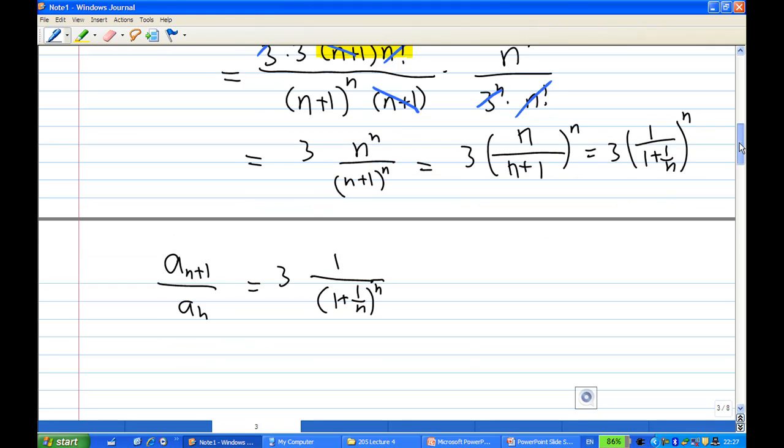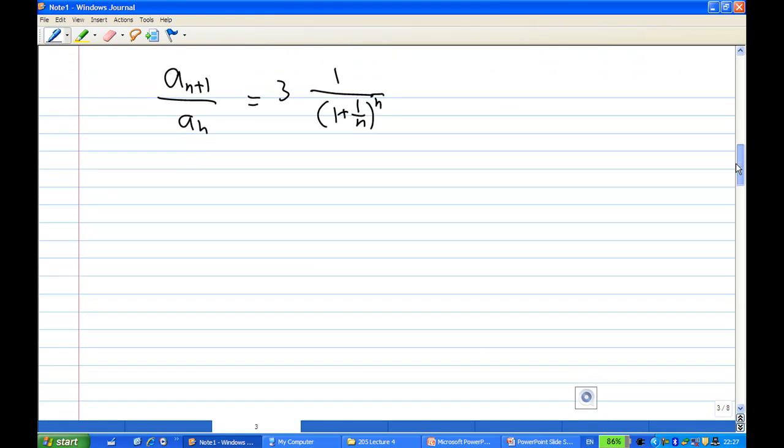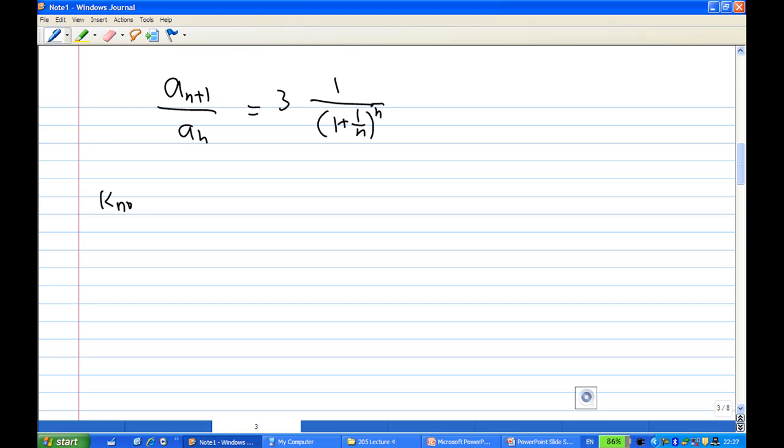Now what is the limit as n goes to infinity? We know from David Blanton text that the limit as n goes to infinity of 1 plus 1 over n to the power n is the number e. e is the number 2.7 something, about 2.71.